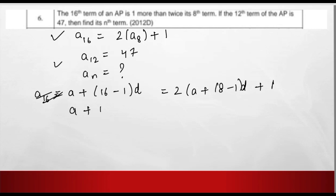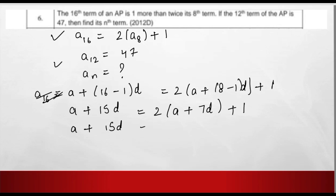Now, a plus (16 minus 1), which is 15, times d, equals 2 times the quantity a plus (8 minus 1), which is 7, times d. Opening the bracket, we can write: a plus 15d equals 2 into a plus 2 into 7, which is 14d, plus 1.